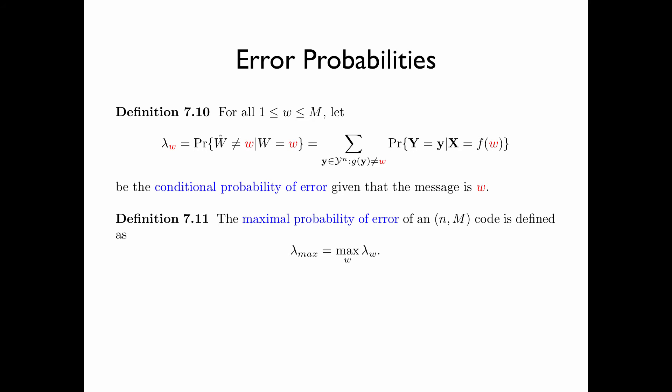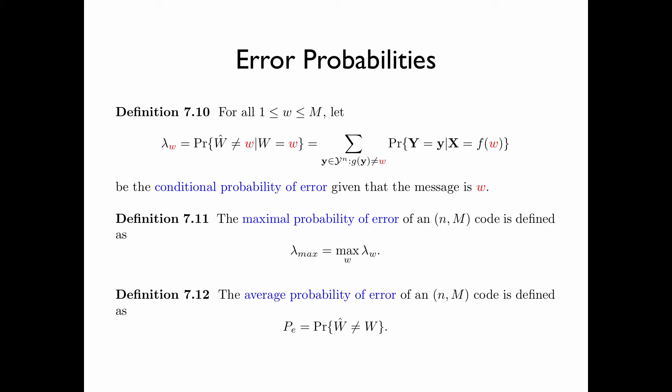The maximum probability of error of an NM code is defined as λ_max, which is the maximum of all λ_w's. In other words, λ_max is the conditional probability of error of the worst codeword. The average probability of error of an NM code is defined as PE, which equals the probability that w-hat, the decoded message, is not equal to w, the chosen message.